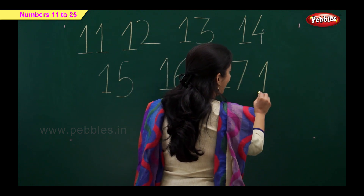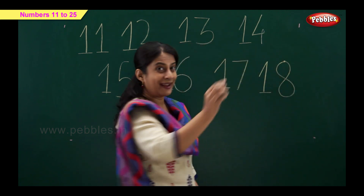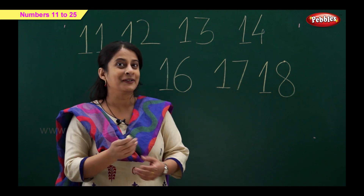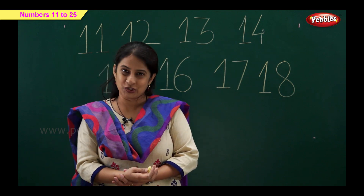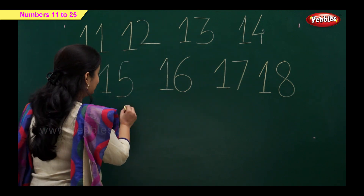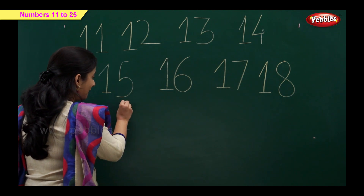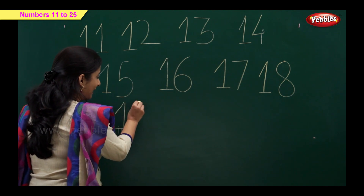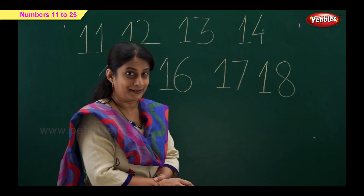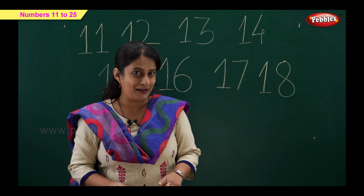1 and 8 is 18. Now which number? 19! 1 and 9 makes number 19. And the new number is 20: 2 and 0 becomes 20.